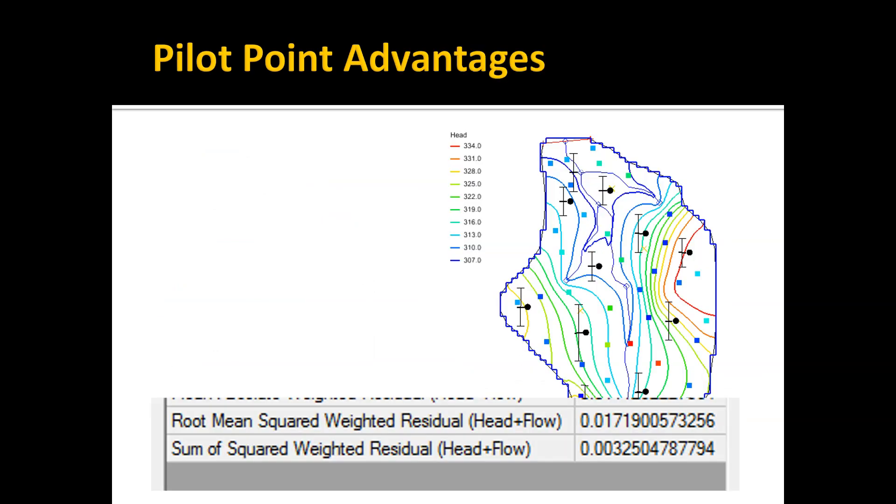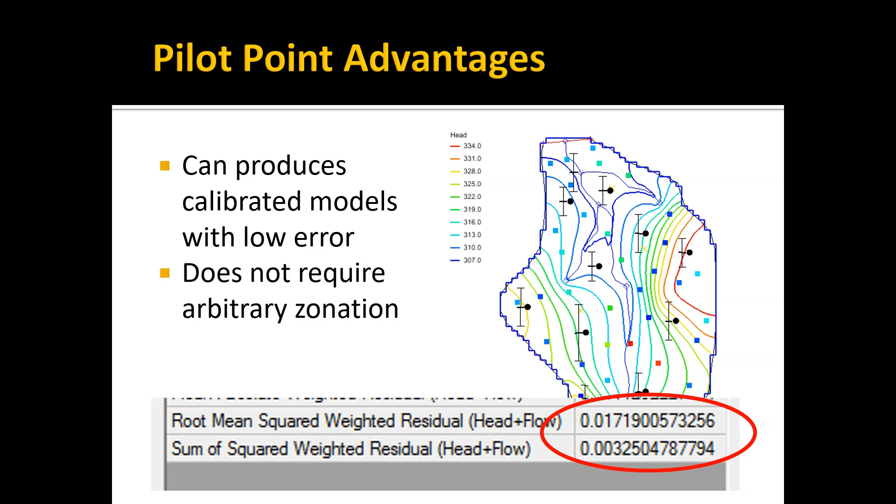The advantages of the pilot point method: it can produce models with low error. Some would argue that you're basically overfitting, but I think a big part of the benefit is real aquifer systems are heterogeneous, and the pilot point method does a good job of simulating that heterogeneity based on information we can derive from the monitoring wells and heads at discrete locations. It doesn't require arbitrary zonation.